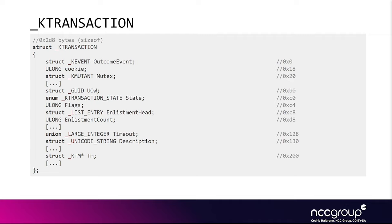The structure is quite big and at first seems overwhelming, but we know it exists and is documented in the symbols. There are a few things in it that are interesting, but we don't need to go through every field. We just know that the transaction exists and we are trying to reverse that big KTM function we don't know much about yet. An interesting field is the linked list of enlistments named EnlistmentHead — basically a linked list of enlistments all associated with that transaction, which is potentially interesting from the reversing perspective if we see it loops over the elements of that list.